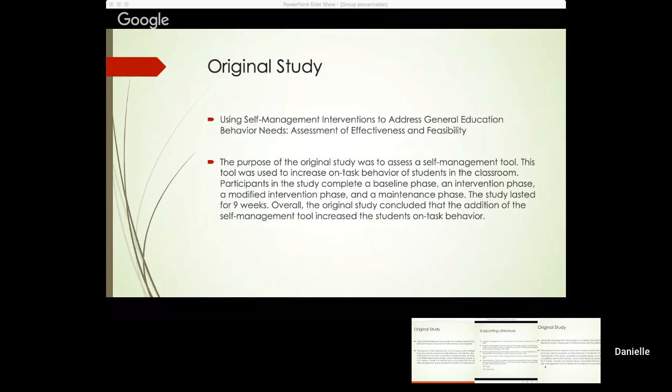The modified intervention was very similar to the initial intervention phase because it included all the parts of the initial intervention phase and also added a binder to hold all the monitoring sheets to reduce students leaving monitoring sheets behind or losing them. They also had an increase of points for meeting their daily goals. They had an accountability partner. They calculated their daily average and they graphed their own data on a daily basis. The entire study lasted for nine weeks. Overall, the study concluded that the addition of the self-management tool increased the student's on-task behavior.